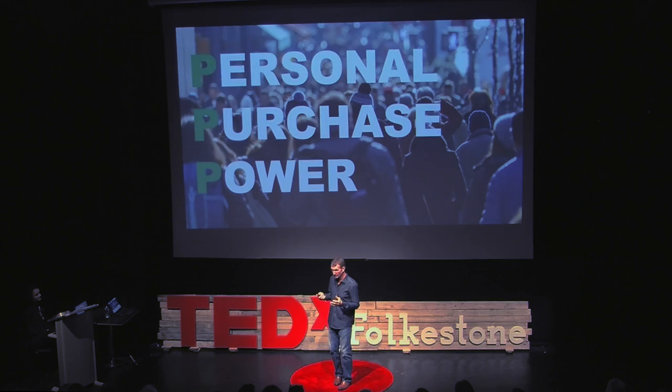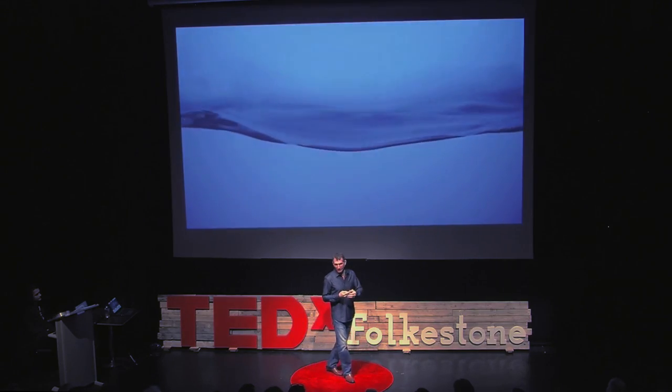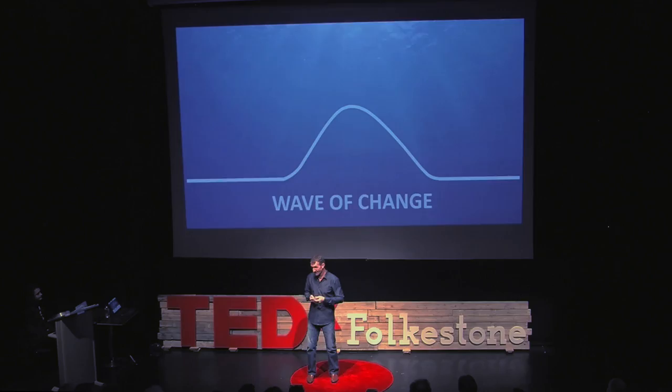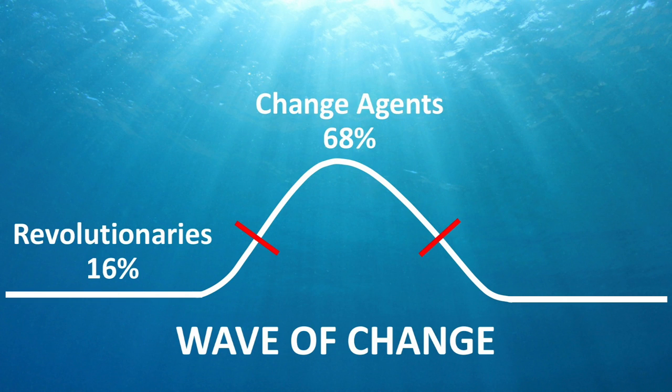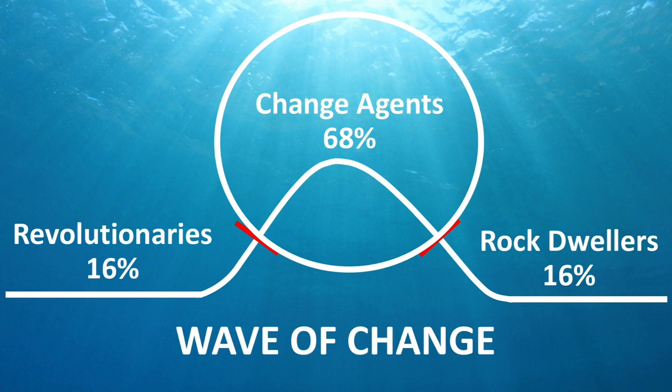So now we know what we can do to push the boundary. How can we push it? Remember that demonstration earlier — to push the boundary we need to create a wave. There's something called the law of diffusion of innovation — I call it the wave of change. The first 16% are revolutionaries. The next 68% are change agents. And the last 16% are rock dwellers — the people that don't believe in climate change. Revolutionaries know what's at stake: they're protesting, signing petitions, sharing on social media — change is all they talk about and they're prepared to do anything to make it happen. Change agents also know what's at stake but they're just waiting for the right course of action to take. What the wave of change tells us is that change cannot occur until we have mass market acceptance of the idea, and that change agents won't adopt the idea until the revolutionaries have adopted it first.